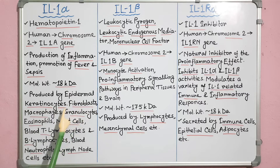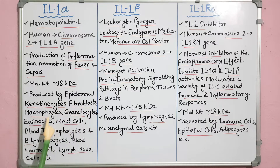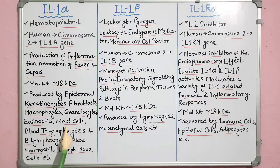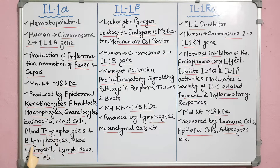IL-1 alpha is produced by epidermal keratinocytes. Some other cells such as fibroblasts, macrophages, granulocytes, eosinophils, mast cells, T lymphocytes, B lymphocytes, neutrophils, and lymph node cells also produce IL-1 alpha.